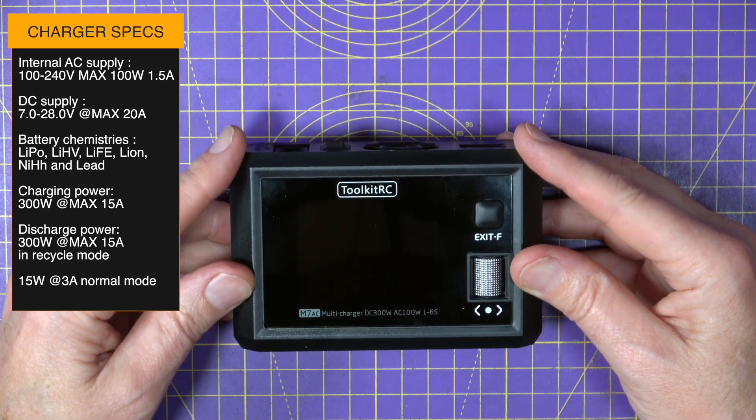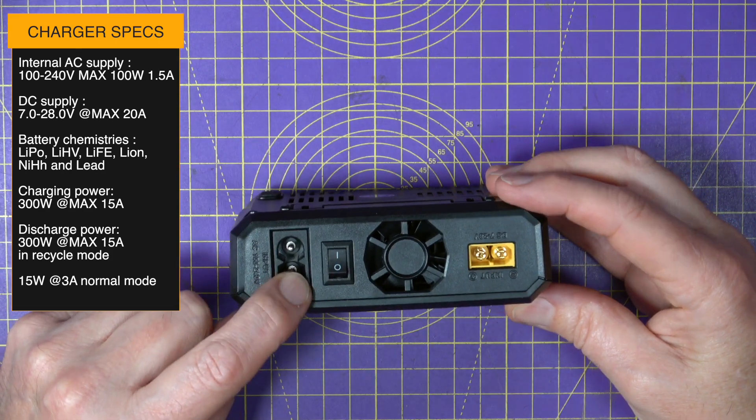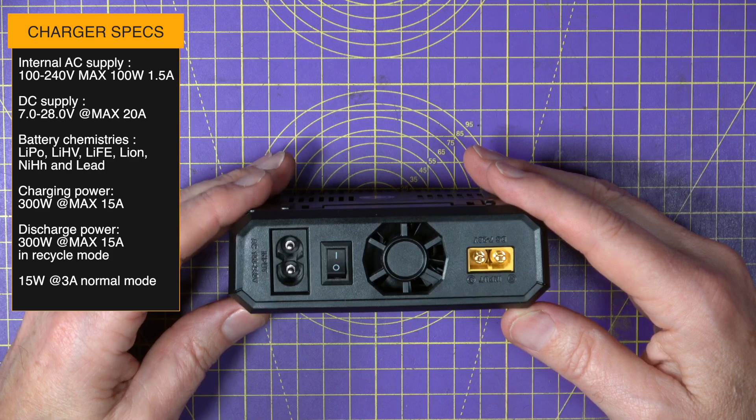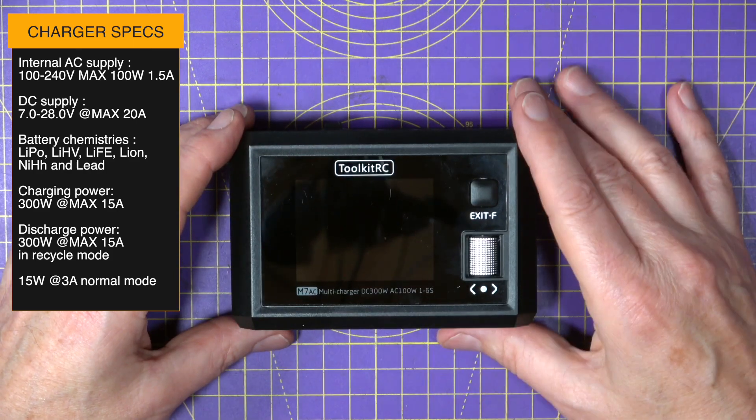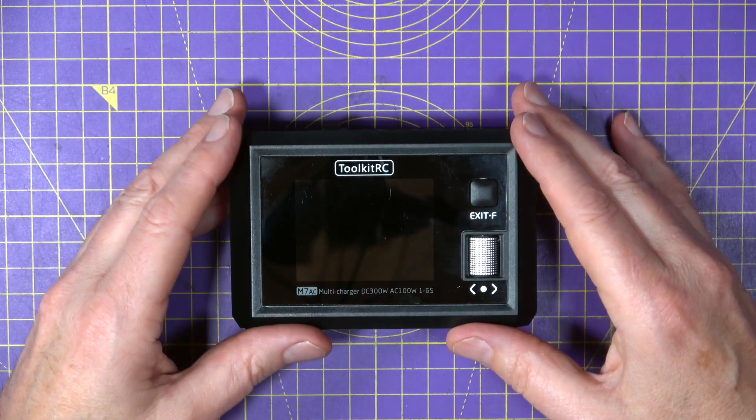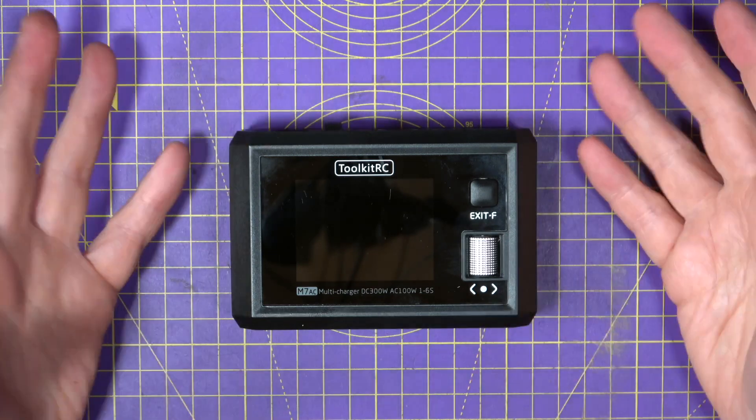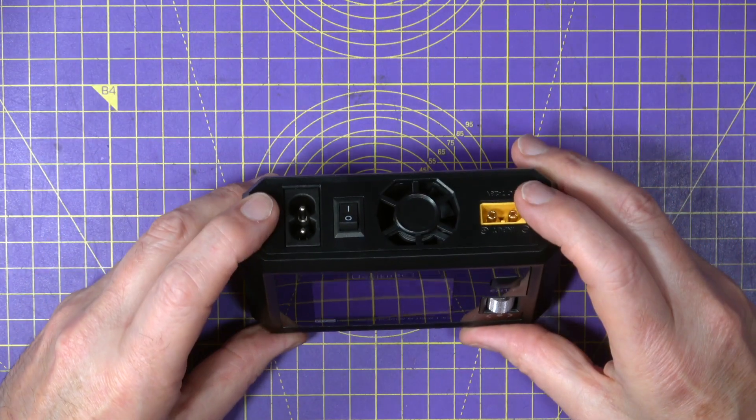But this has also got an internal AC power supply so you can plug this into your mains outlet and that's very convenient when you're at home. And using the internal supply makes this a 100 watt charger which is still very respectable. It means you can charge say a 6s lipo at 1.5 amps if you want. If you want more you just need to use the DC input.